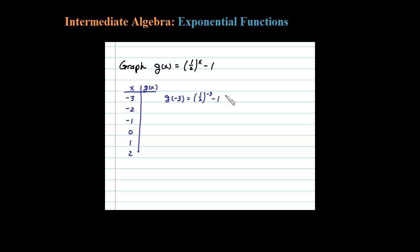Now remember, negative 3 power — that's the same thing as 2 over 1 to the third power, minus 1. Using the rules of exponents, we're going to reciprocate the one-half and take that to the third power. That's 8 minus 1, which is 7. So negative 3 comma 7 should be a point on the graph.